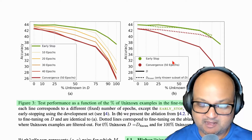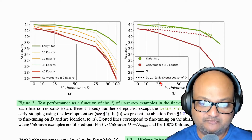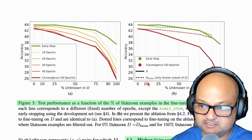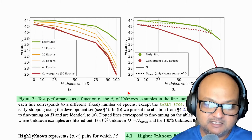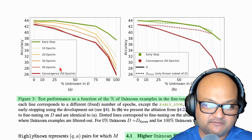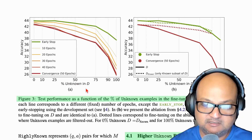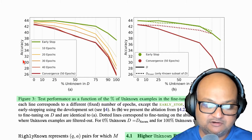Once they have these categories of information, they go ahead and perform different fine-tunings of the model with different percentages of unknown examples in the fine-tuning dataset. This graph shows the headline result from the paper, which is that regardless of how many epochs the model is fine-tuned for, as the percentage of unknown items in the fine-tuned dataset increases, the accuracy of the answers suffers.